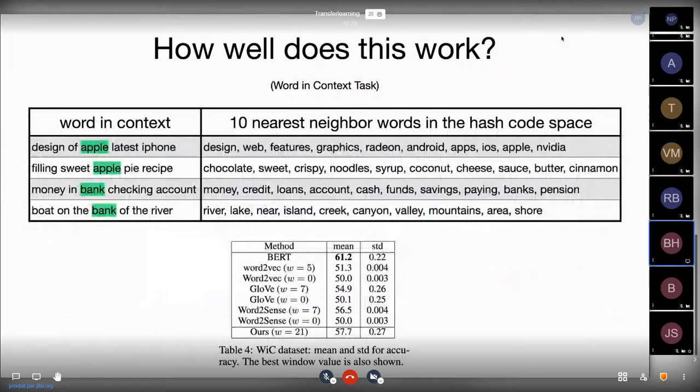And we have an interactive demo that you guys can play with here in a bit that I'll show you that does something similar to this. So now we have another task. And this is the word in context task. And it can be described as follows. You have a pair of sentences now, not a pair of words. And you have the same word in each of these contexts, but they mean sometimes different things. And sometimes they mean the same thing, depending on the words around it. So let's look at the apple. Apple is the name of a company, design of Apple, latest iPhone. And then apple is also a delicious fruit, one of my favorite, filling sweet apple pie recipe.